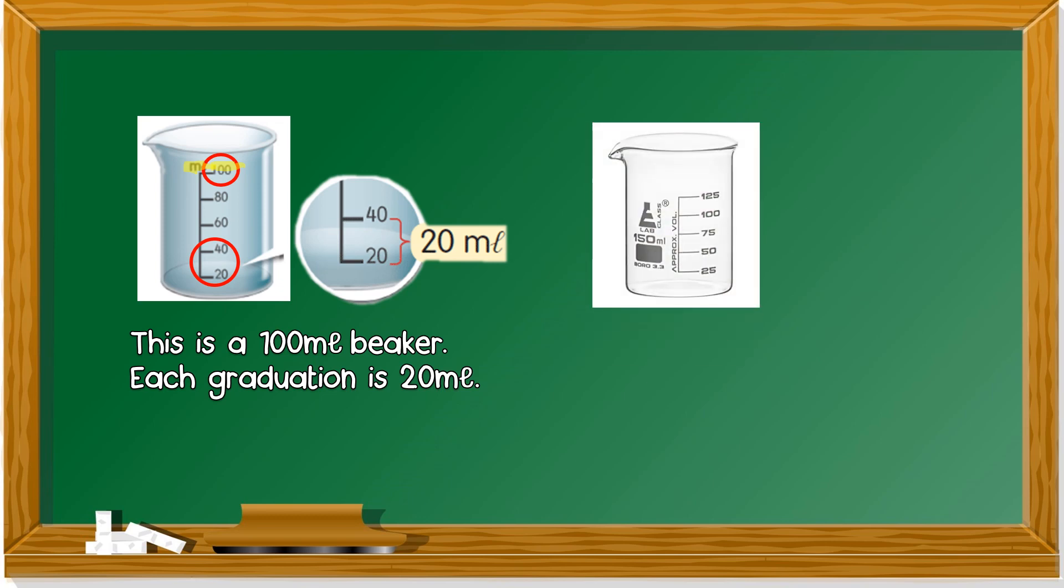We look at this beaker. What beaker is it? 125 milliliter beaker. So it's a 125 milliliter beaker. How about the graduation? 50 minus 25 is 25. So each graduation is 25 milliliter.